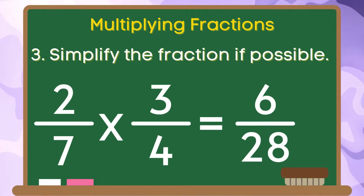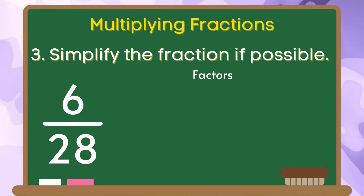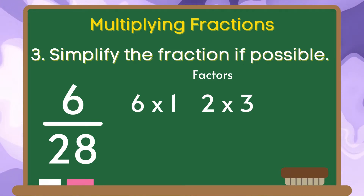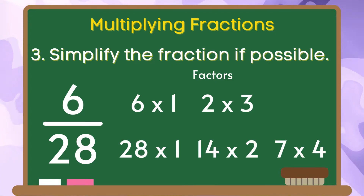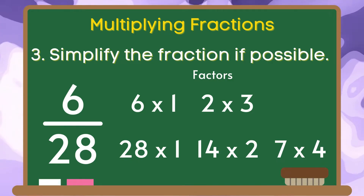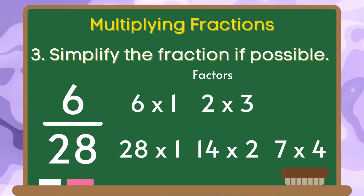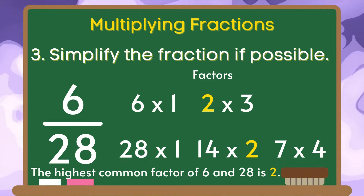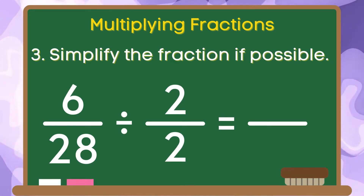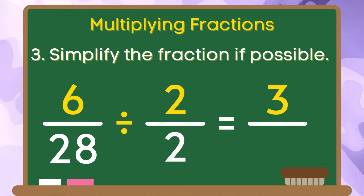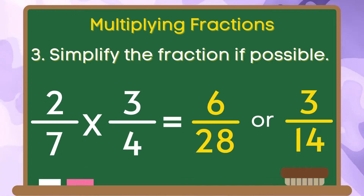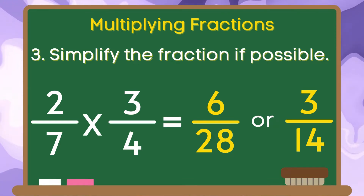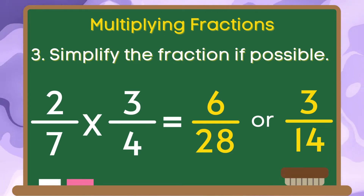And for the last step, let us simplify our fraction if possible. Let us get the factors of 6 and 28. The factors of 6 are 1, 2, 3, and 6. The factors of 28 are 1, 2, 4, 7, 14, and 28. The highest common factor of 6 and 28 is 2. To simplify the fraction 6 over 28, we are going to divide 6 by 2 and the answer is 3. 28 divided by 2 and the answer is 14. Therefore, the product of 2 sevenths and 3 fourths is equal to 6 over 28 or 3 over 14.